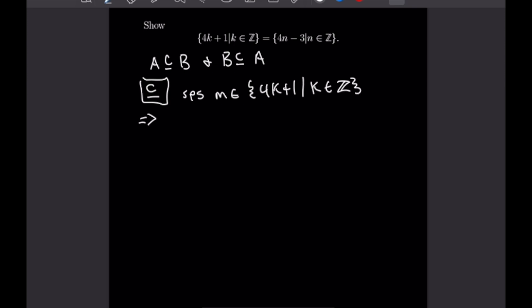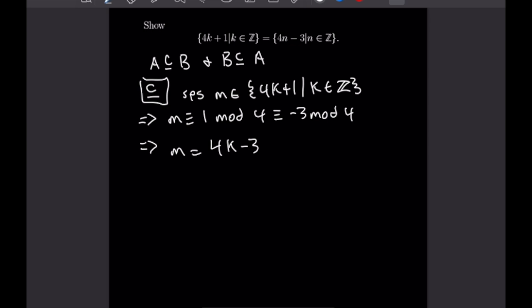Well then M is congruent to 1 mod 4, as it is one more than a multiple of 4, and we can see that will be congruent to −3 mod 4, as those are just the same. That means we can rewrite M as 4k−3, but that is of the form we have on the left, which means that M is in the set 4n−3 where n is an integer.